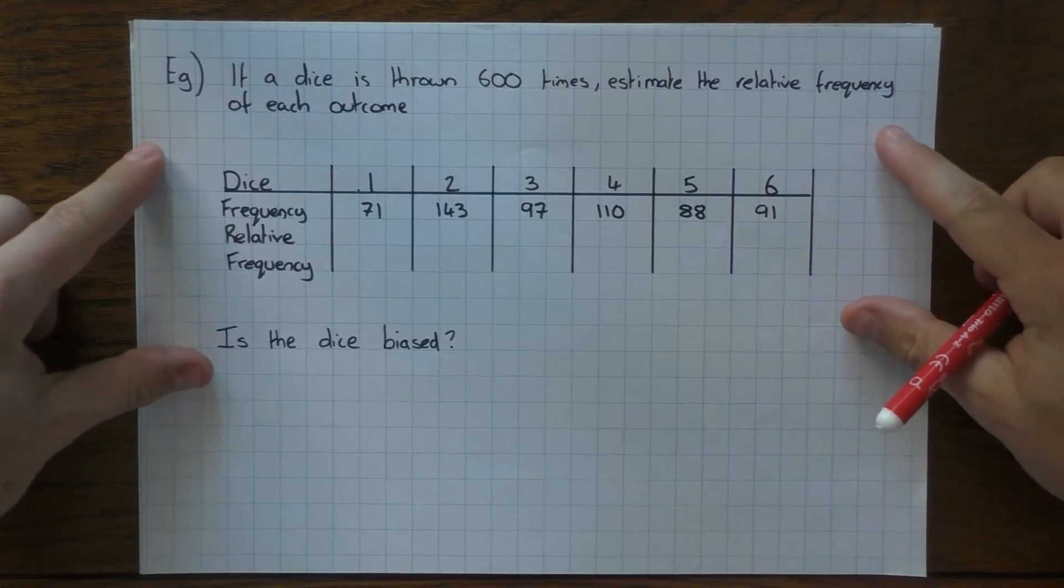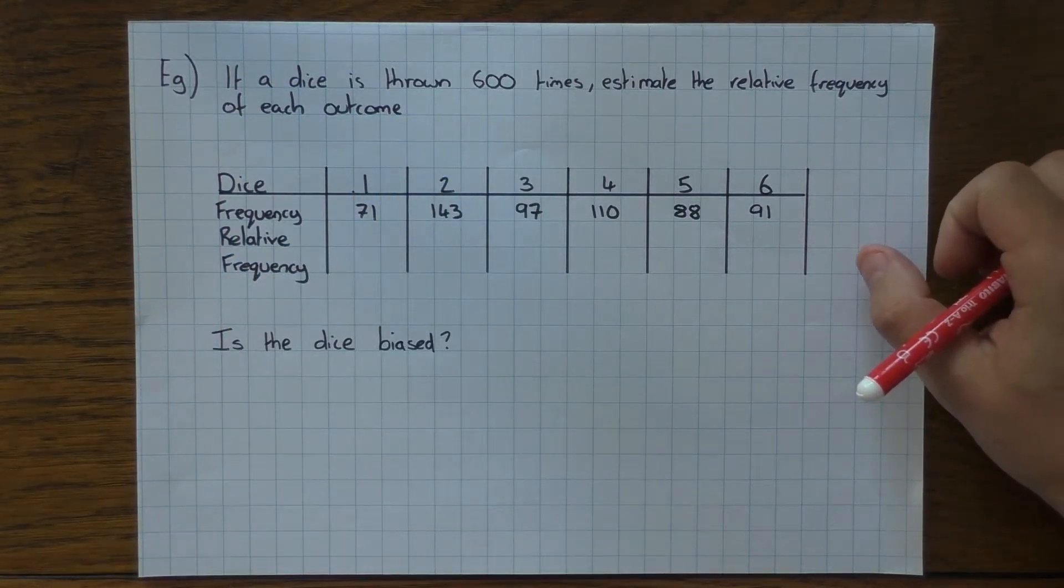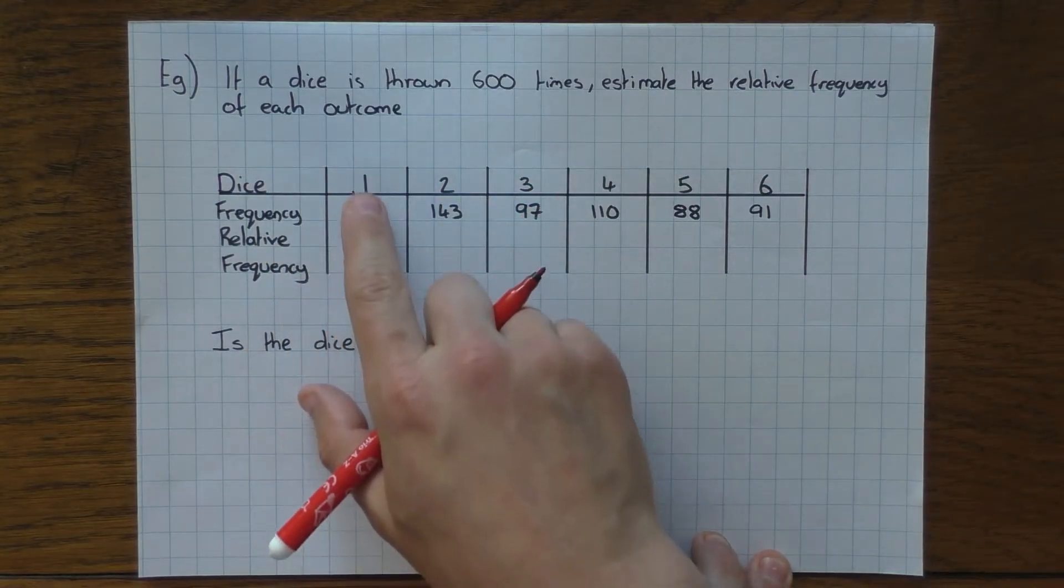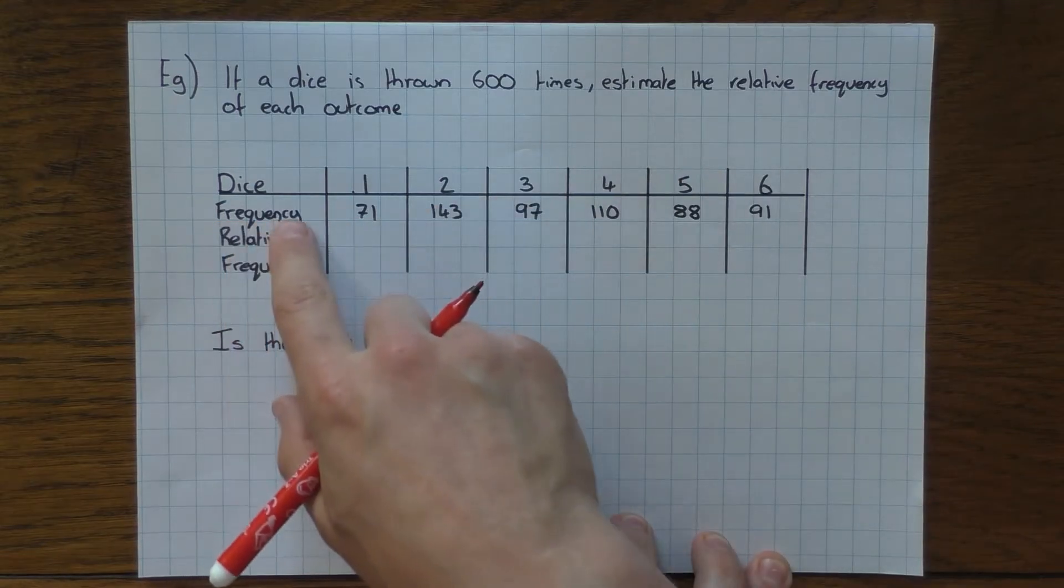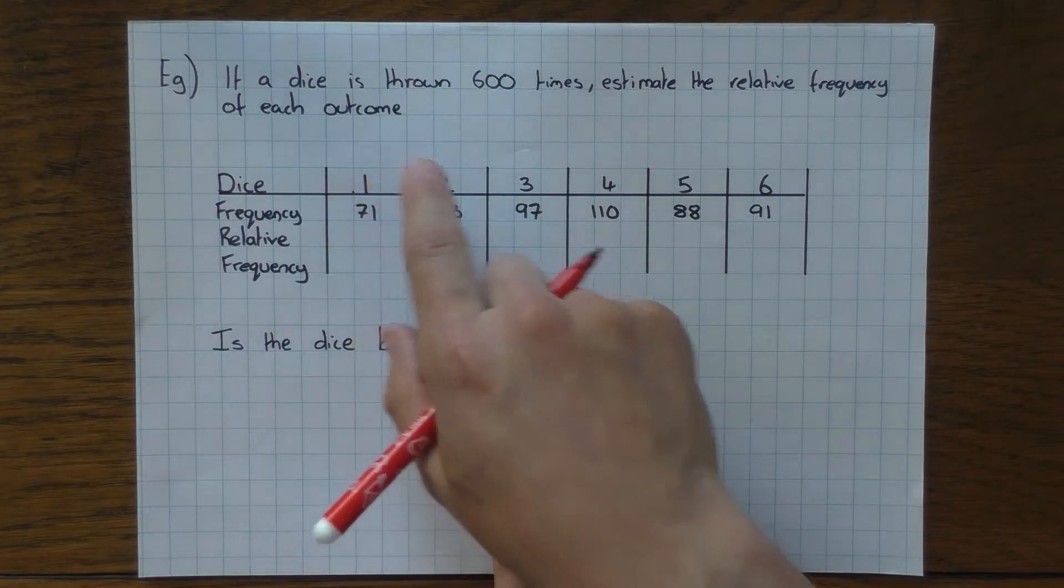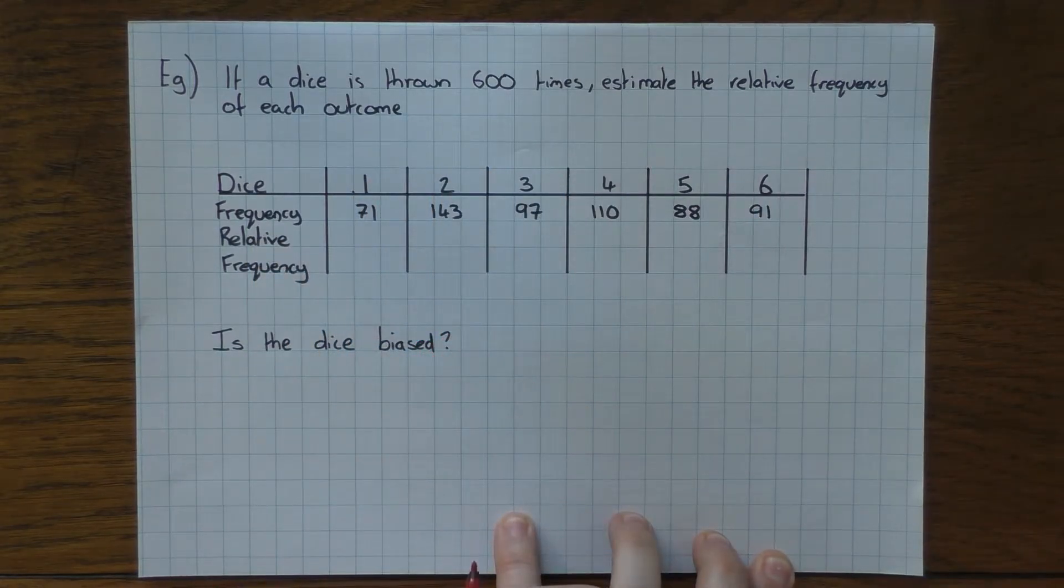So if a dice is thrown 600 times, estimate the relative frequency of each outcome. So here's the outcomes of rolling a dice: 1, 2, 3, 4, 5, 6. Frequency—how many times they each landed on a 1, 2, 3, 4, 5, or 6—and we need to work out the relative frequency.